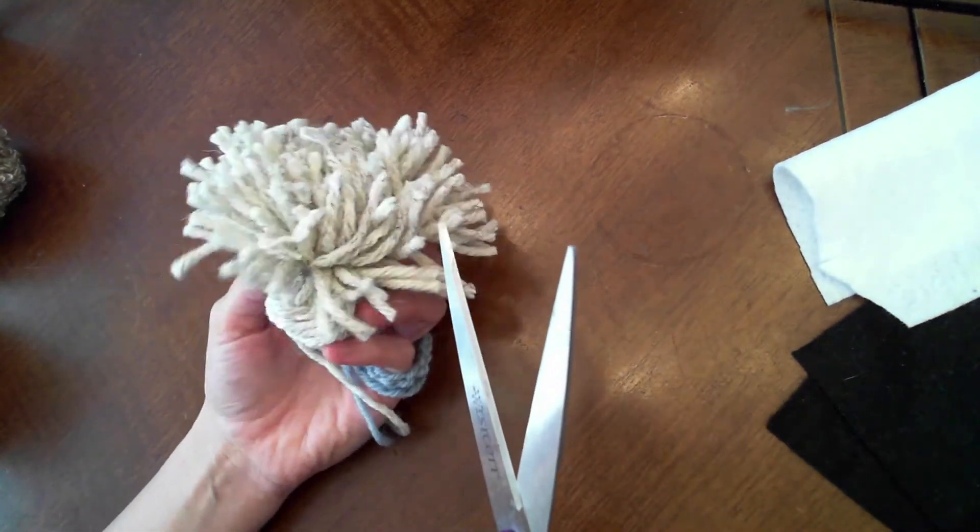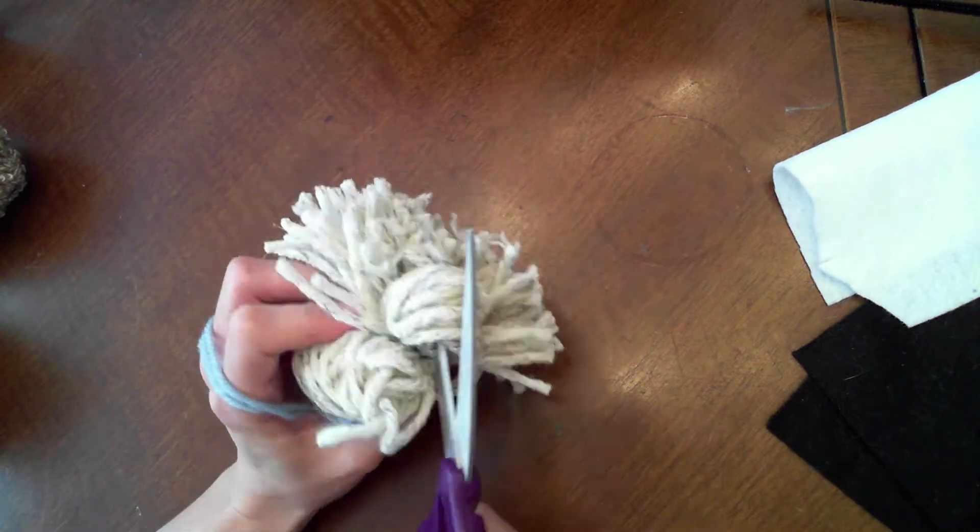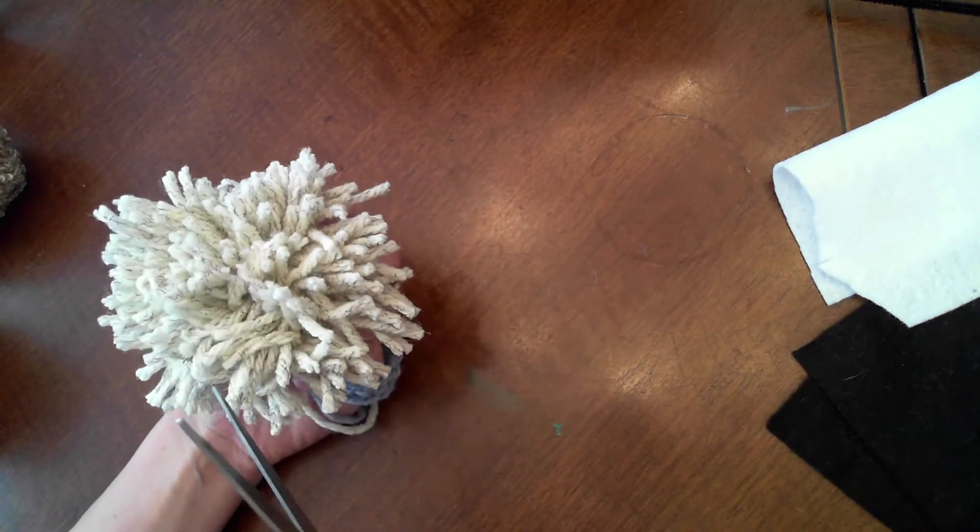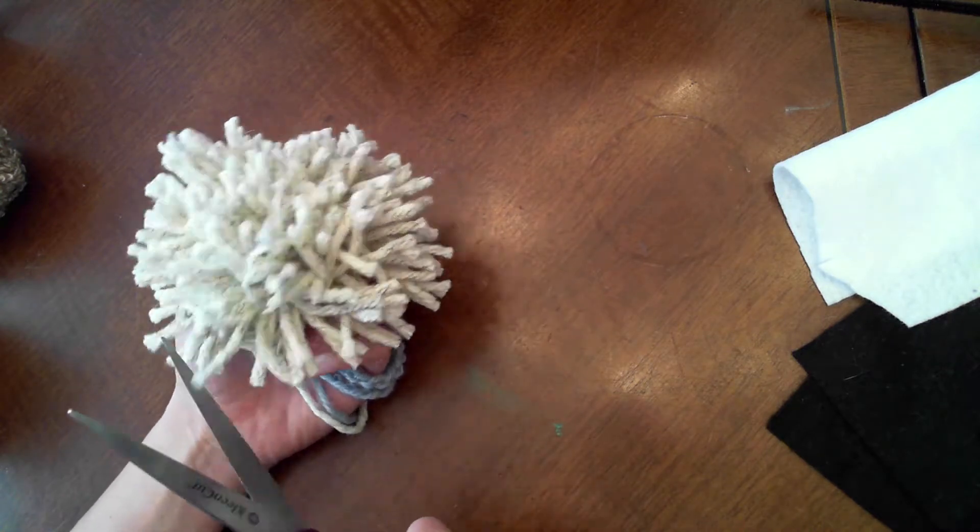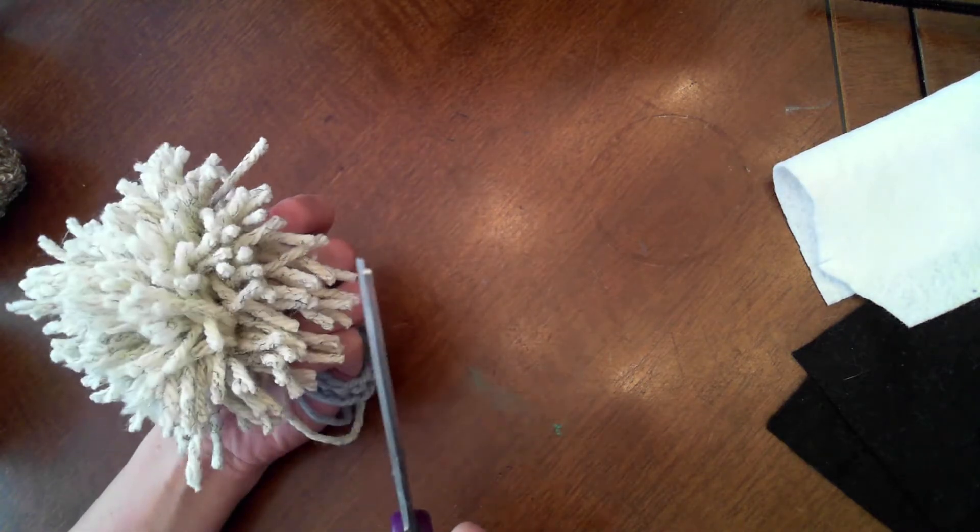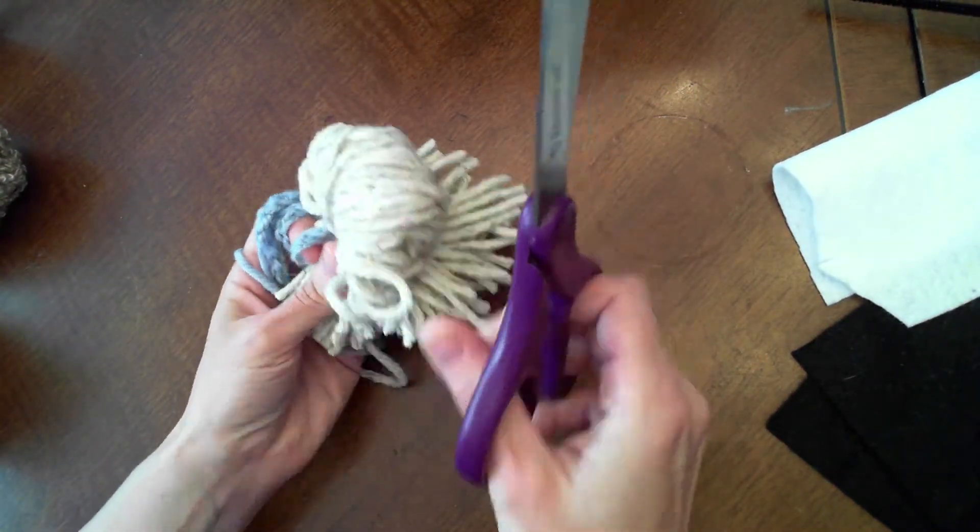You can see it's already floofing out into a pom-pom. Now as I go through I can see some loops that I missed so I really do try to get all the loops on each side but of course there's always one that gets away. I'm still holding on to that blue yarn as I change sides.